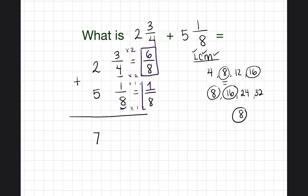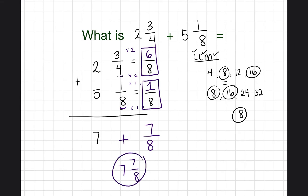Now that we have six over eight plus one over eight, they have the same denominators, so we can easily add them. The answer keeps the same denominator of eight, and we add the numerators: six plus one is seven. So we have seven wholes plus seven over eight, which equals seven and seven-eighths.